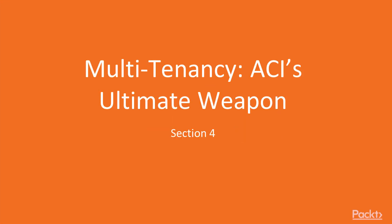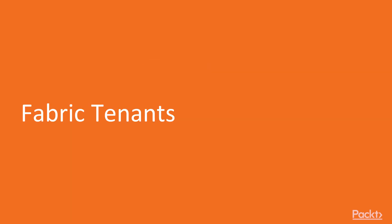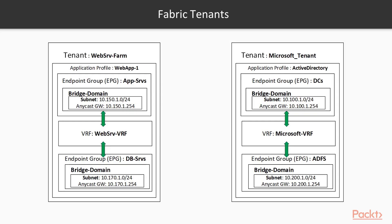Let's continue on to Section 4: Multi-Tenancy — ACI's Ultimate Weapon. Let's begin by discussing fabric tenants. In ACI, this is 90% of your workload — you're going to be configuring tenants, creating application profiles, attaching endpoint groups, adding bridge domains, and connecting them via a VRF. So why do we use tenants? Let me draw this out.